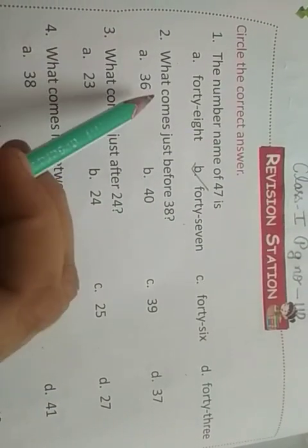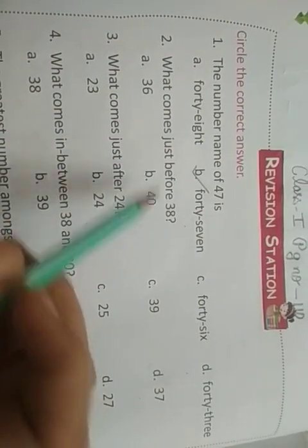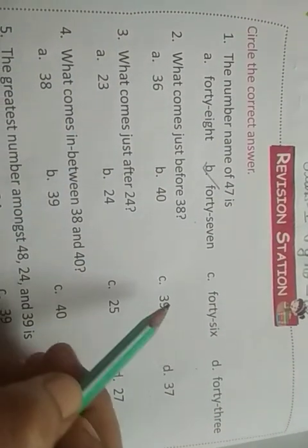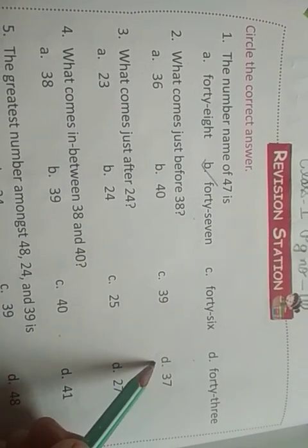Second, what comes just before 38? a) 36, b) 40, c) 39, d) 37. Before means पहले. So 38 के पहले क्या आएगा? 37.